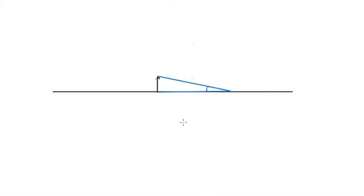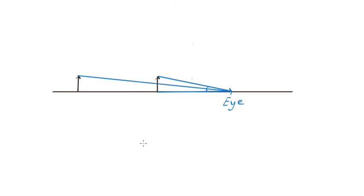This is the angle subtended by the ant at my eye. What if I place the ant at a further distance from the eye? If I place the ant out here, the angle subtended by the ant is going to be smaller. From this it is clear that the closer the ant, the bigger the angle it subtends at the eye, and further away it is, the smaller the angle. So objects further away appear smaller because they subtend a smaller angle at the eye.